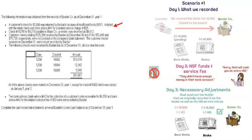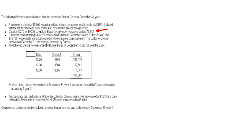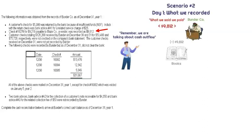Next scenario: a check payable for $9,218 to BlazeCo, one of our vendors, was recorded by Gerald as $9,812. He booked it as $9,812 even though the correct amount actually paid was $9,218 — Gerald made a recording error. The difference is $594. He essentially said we spent $594 more than we actually did, meaning our cash balance per the books shows $594 less than we actually have.